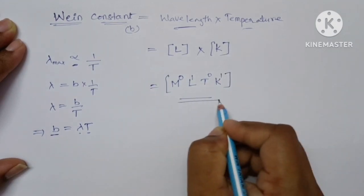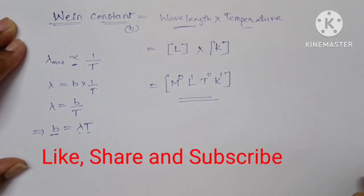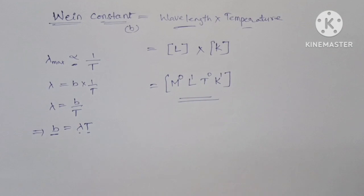This is the dimensional formula of Wien constant. I hope it is clear to you. Please like the video, share with your friends and don't forget to subscribe the channel. Thank you for watching.